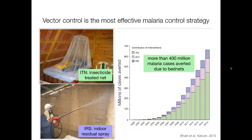Those are represented in these pictures here on the left. ITNs are insecticide-treated nets that protect people sleeping under them. The mosquitoes land on the net and try to bite the person sleeping and are exposed to insecticides. So it's not just physical protection — it's also delivering a dose of insecticides to the mosquito. The other major approach is indoor residual spray, where the walls of people's homes are sprayed with insecticides. The mosquitoes, after they bite people, will go off and rest on the walls to digest, and then they're delivered a dose of insecticide.